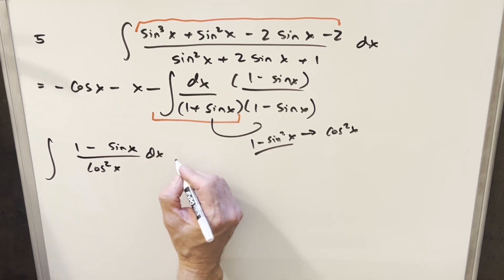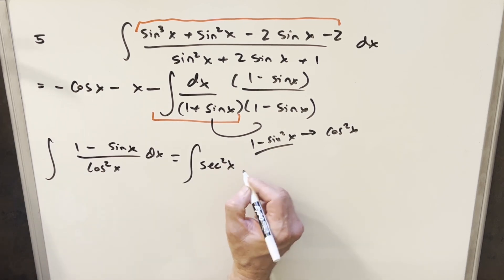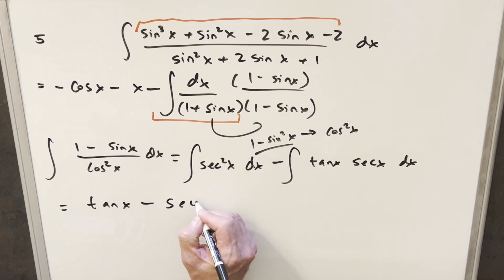I think what I'll do is come down here and rewrite this. So I'm going to have 1 minus sine x over cosine squared x dx. But then I'm going to break this into two integrals. So the first one is going to be 1 over cosine squared x. That's just going to be secant squared x. And then the second one, this is actually going to be sine over cosine. It's going to give me tangent. And then we have another cosine. So that's going to give me secant. But now we have two really well-known integrals. So the integral of secant squared is going to be tan x. And the integral of tan x secant x is going to be secant x.